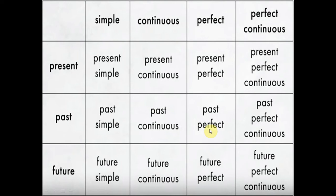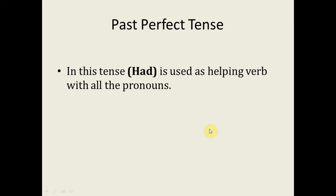First of all, I will tell you that in the past perfect tense there is only one helping verb, and that is 'had.' Whether it is singular nouns and pronouns or plural nouns, we will use 'had' with all of them. This is rule number one.